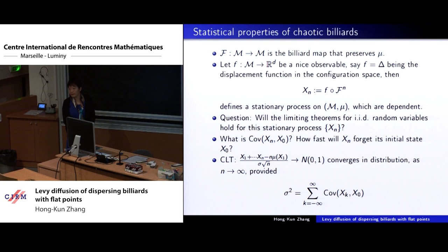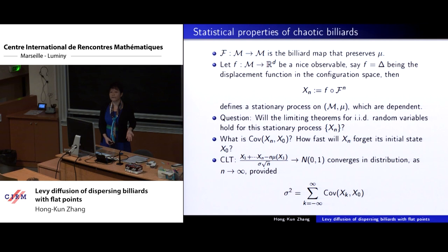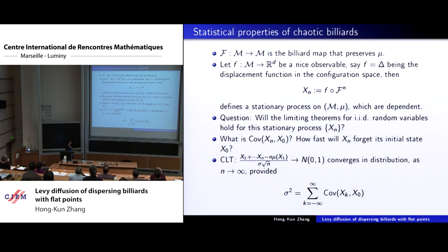You take an observable and define the stationary casting process; of course they are dependent. Since they are a dependent process, we ask about the limiting theory that is true for the IID case — are they still true here? The first thing we are interested in is the decay rate of correlations. If they decay really fast, we expect to have the classical central limit theory, and in particular under the Green-Kubo formula, the diffusion constant can be written as the infinite series of the covariance. The main question is: when the decay correlation is really slow and the Green-Kubo formula fails, what kind of limiting theory do we expect?